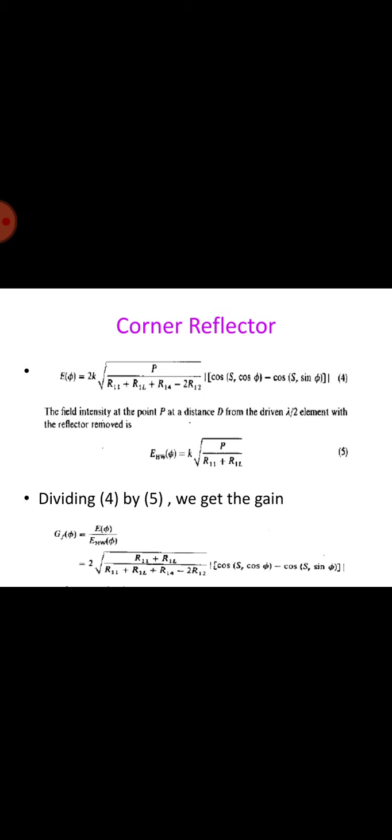The field intensity at point P at a distance D from the driven lambda by 2 element with the reflector removed will be given as k times square root of P by r11 plus r1l. Dividing these equations, we get the gain as G equals E(s) by E(0). That is given by 2 times square root of r11 plus r1l divided by r11 plus r1l plus r14 minus 2 r12, times cos(sr cos phi) minus cos(sr sin phi).